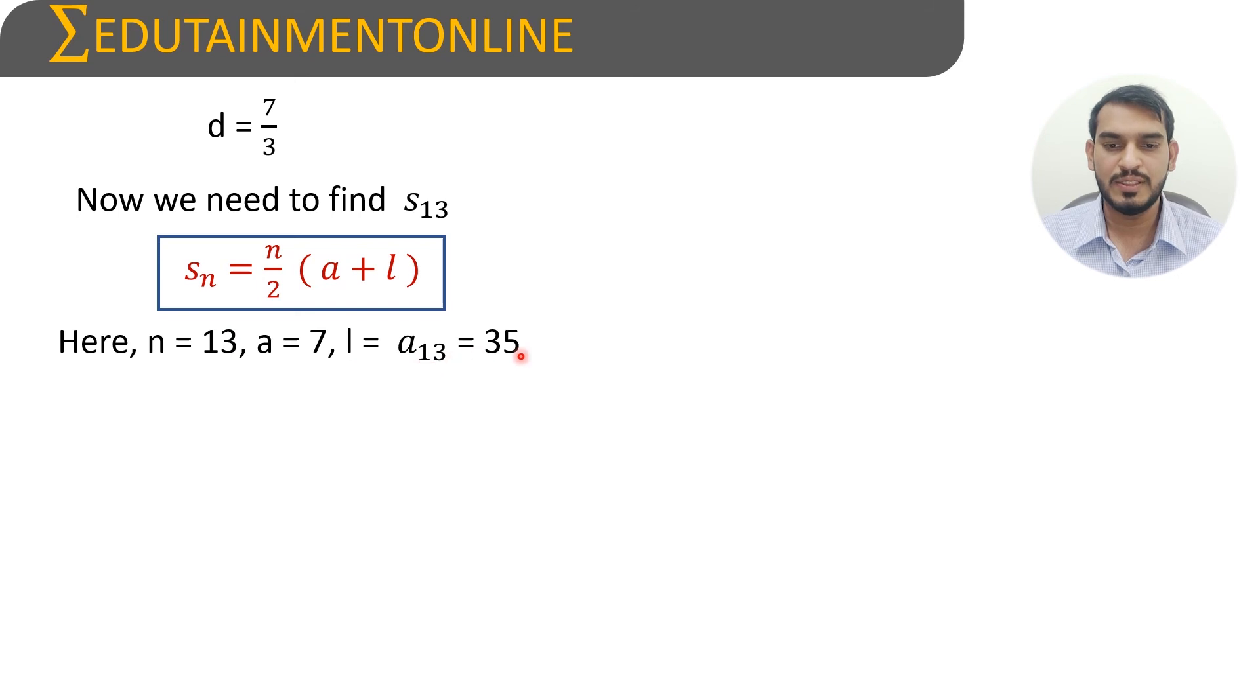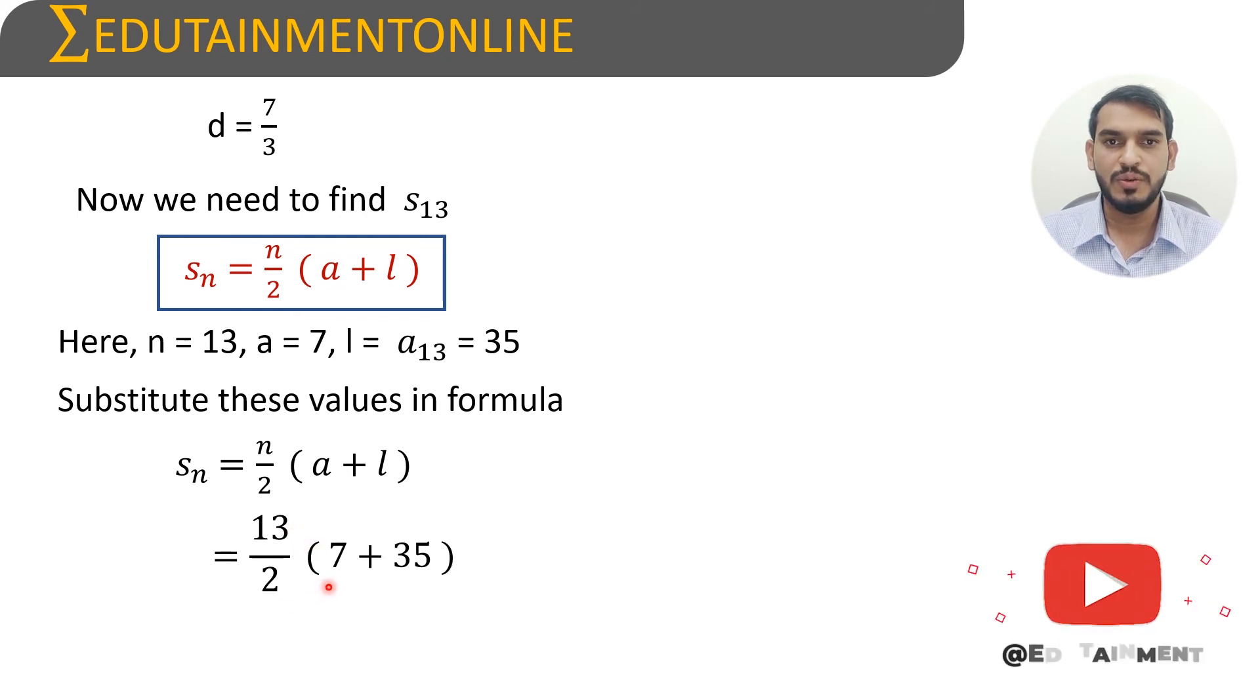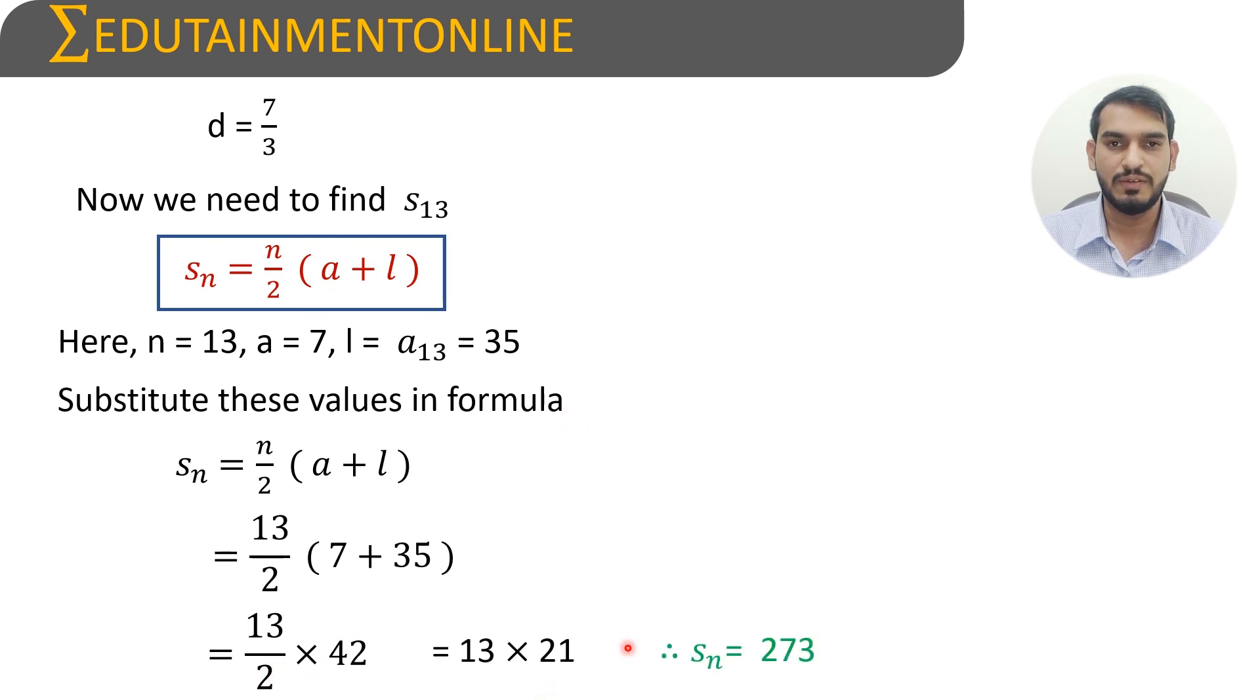So sₙ = n/2(a+l), which is 13/2(7+35). 13/2 times 42. We can cancel to get 13 times 21. 13 times 21 is 273, so s₁₃ equals 273.